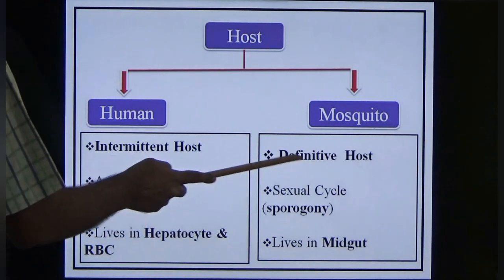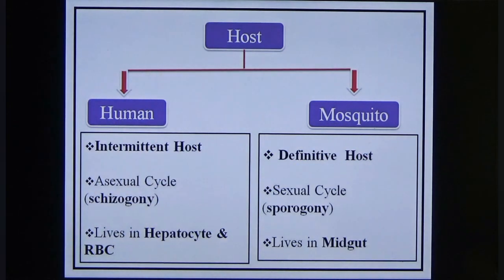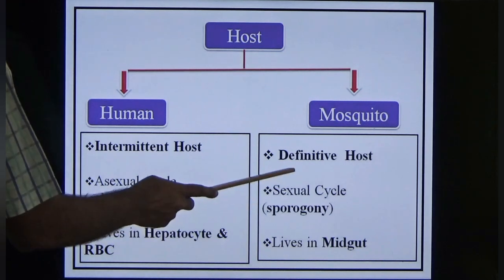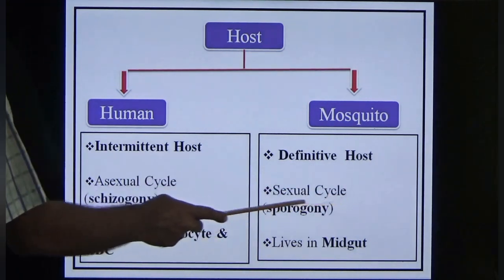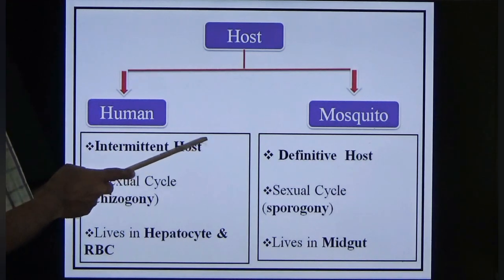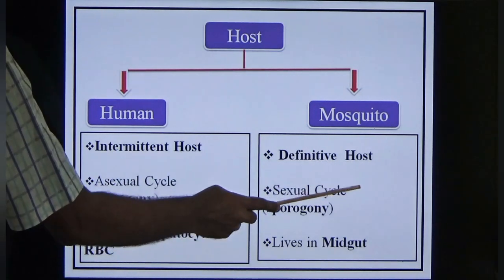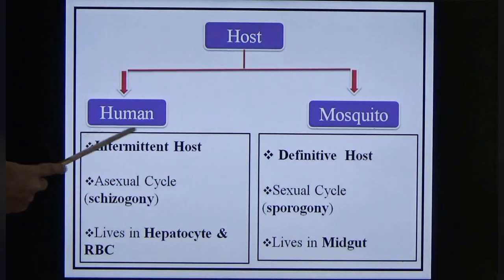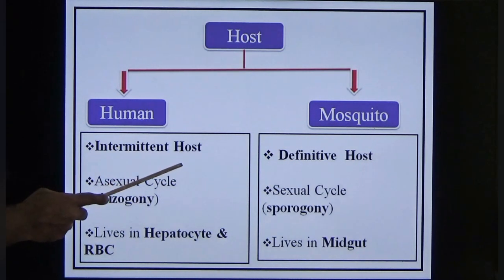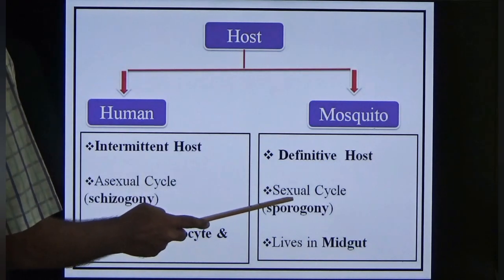The human is the intermediate host and the mosquito is the definitive host. The definitive host is where the sexual cycle occurs and the adult form of the parasite is present. The intermediate host is where the asexual cycle occurs and the larval stage of the parasite is present. The asexual cycle occurs in humans and the sexual cycle occurs in mosquitoes.